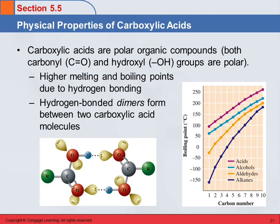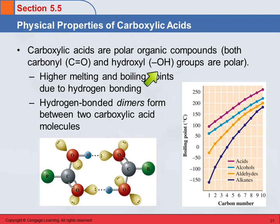Carboxylic acids are really quite polar. On that carboxyl group, we've got the carbonyl group, which is polar, and the hydroxyl group is polar. Because we have this hydroxyl group, we have the potential for hydrogen bonding. Hydrogen bonding, being the strongest intermolecular force, is going to cause carboxylic acids to have higher melting and boiling points compared to similar-sized organic compounds that are not carboxylic acids.